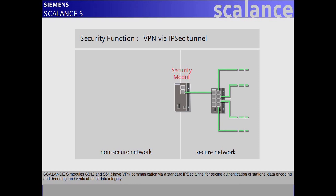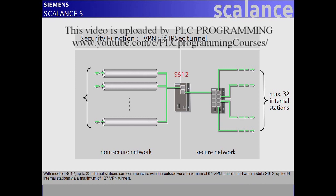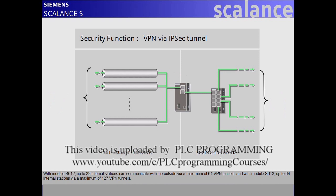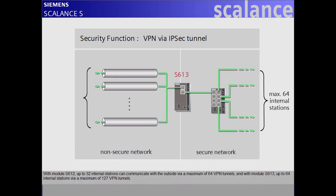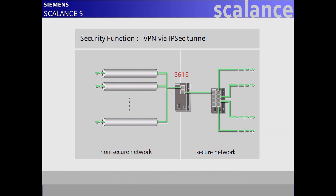Scalance S modules S612 and S613 have VPN communication via a standard IPsec tunnel for secure authentication of stations, data encoding and decoding, and verification of data integrity. With module S612, up to 32 internal stations can communicate with the outside via a maximum of 64 VPN tunnels. With module S613, up to 64 internal stations can communicate via a maximum of 127 VPN tunnels. Both IP messages and non-IP messages, such as layer 2 messages, can be transmitted through the IPsec tunnel.